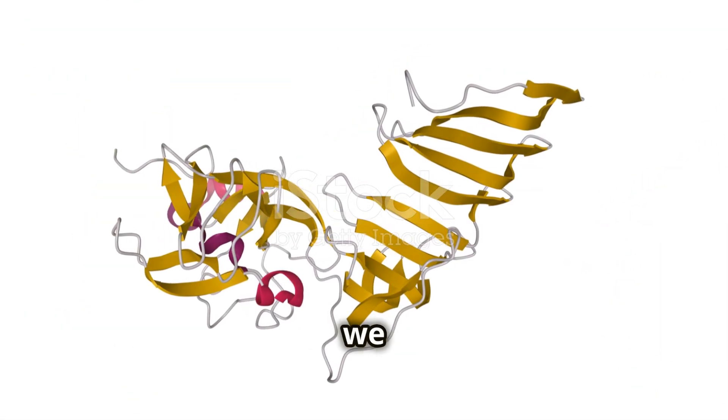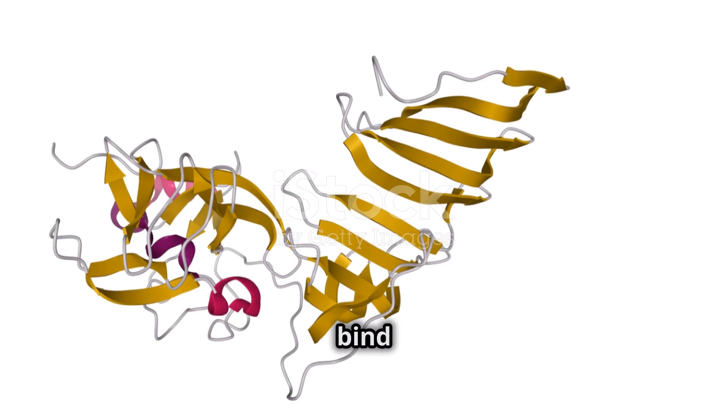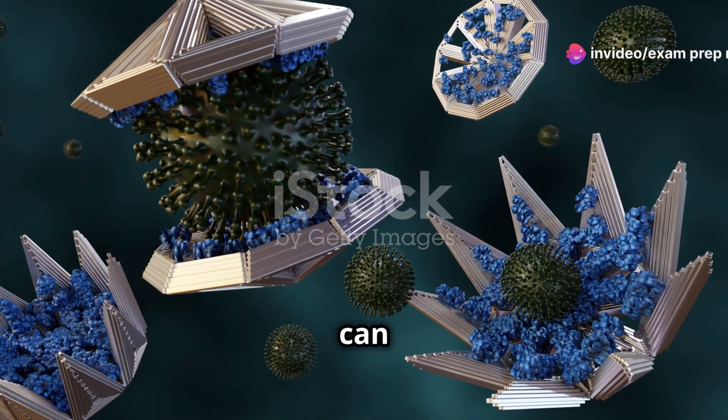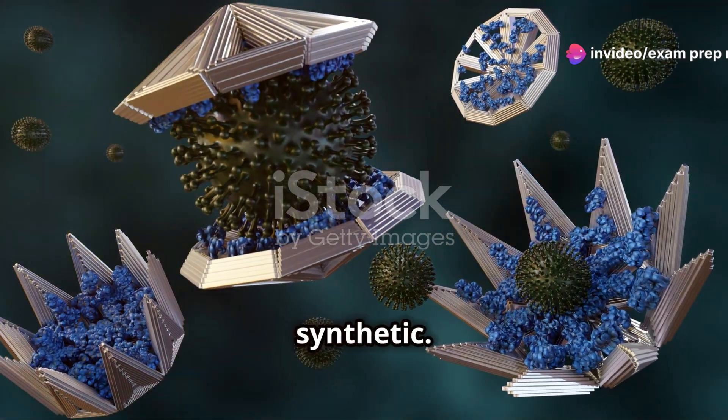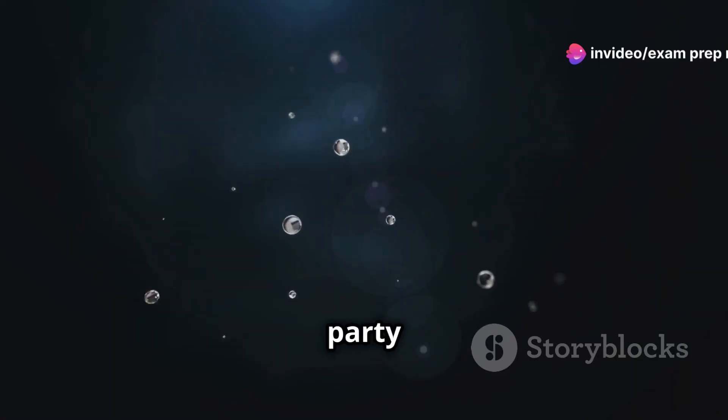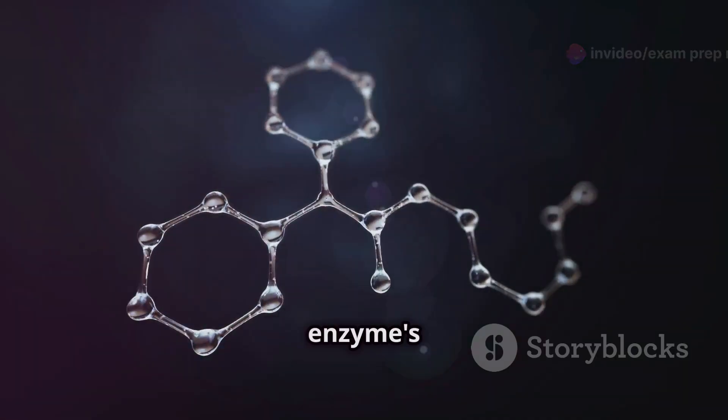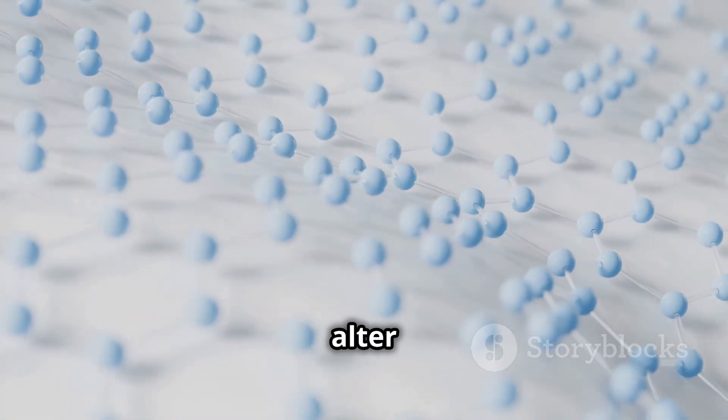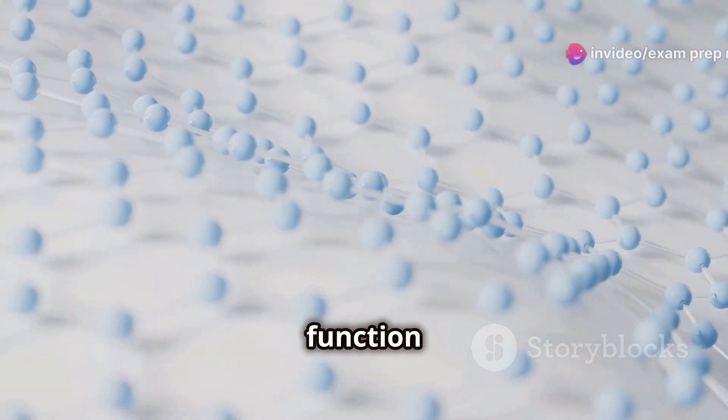And finally, we have enzyme inhibitors, molecules that can bind to enzymes and reduce their activity. These inhibitors can be naturally occurring or synthetic. Think of them as party poopers who interfere with the enzyme's work. They can prevent the enzyme from binding to its substrate or alter its shape so it can't function properly.